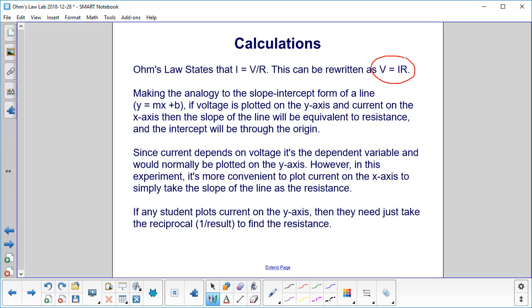We're going to compare this to the slope-intercept form of the line. If we plot voltage on the y-axis and current on the x-axis, then the slope of the line will be the resistance, and the intercept will be through the origin.